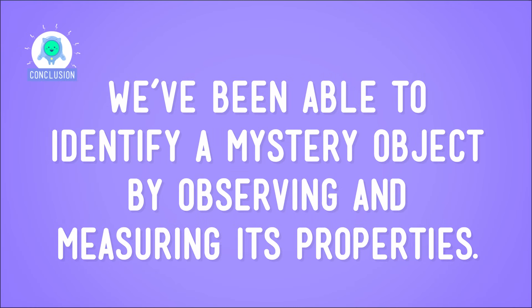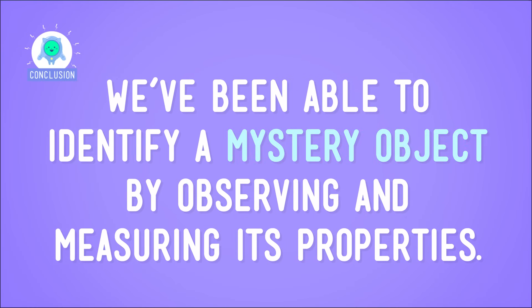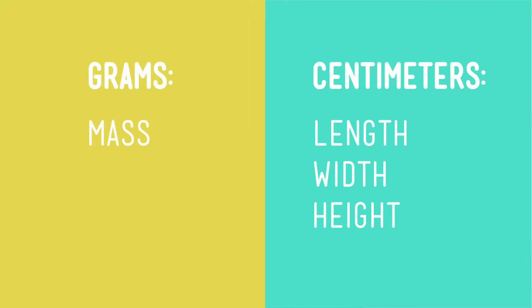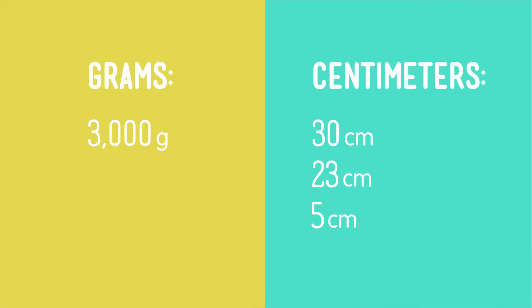So we've been able to identify a mystery object by observing and measuring its properties. We used units in the metric system to put values on properties such as grams for mass and centimeters for length, width, and height. And those numbers gave us enough clues to solve the mystery of what I kicked in the dark. So remember, when it comes to measuring, think metric. And when it comes to identifying objects, take a tip from me — avoid identifying them with your toe.